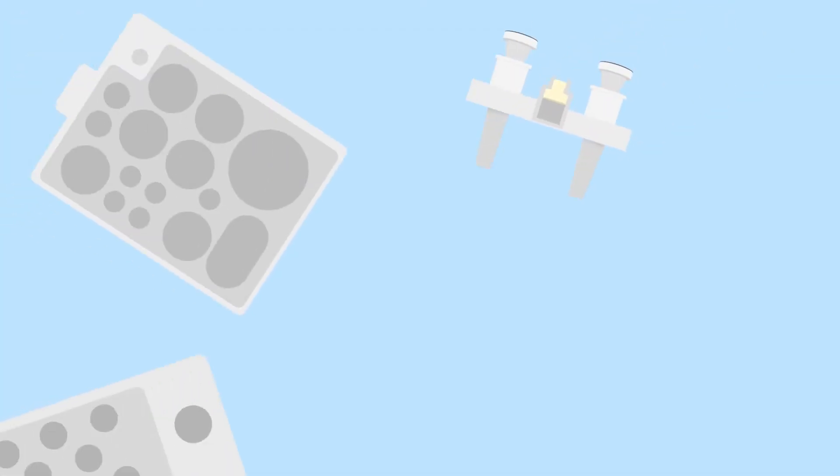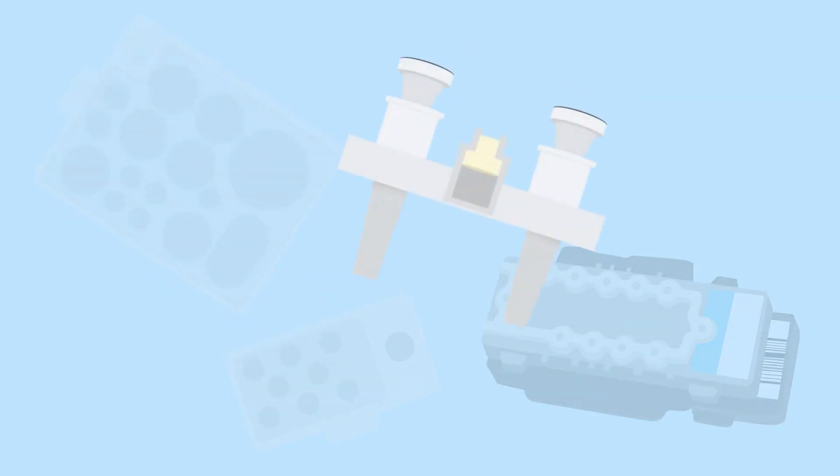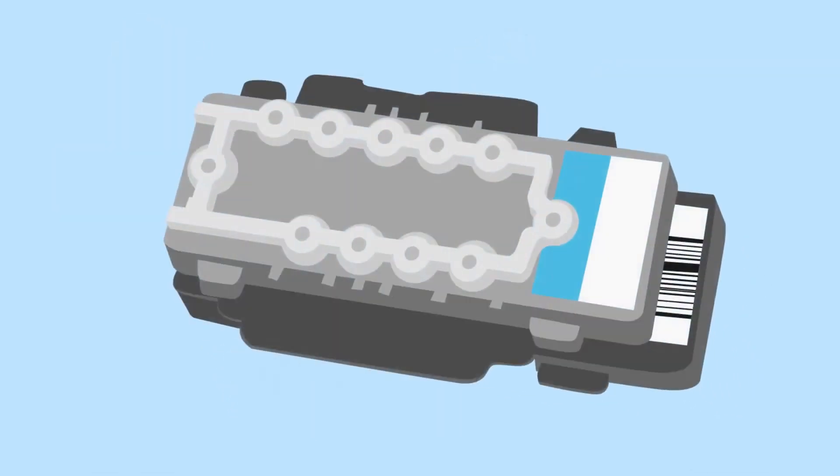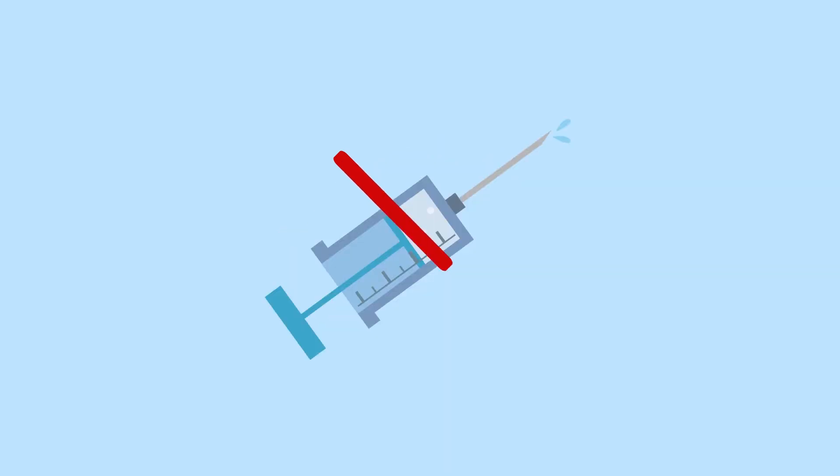Each Verigene test utilizes four single-use consumables: an extraction tray, tip holder assembly, utility tray, and test cartridge. These self-contained reagent packs arrive ready to use without the need for mixing, heating, or rehydration steps.